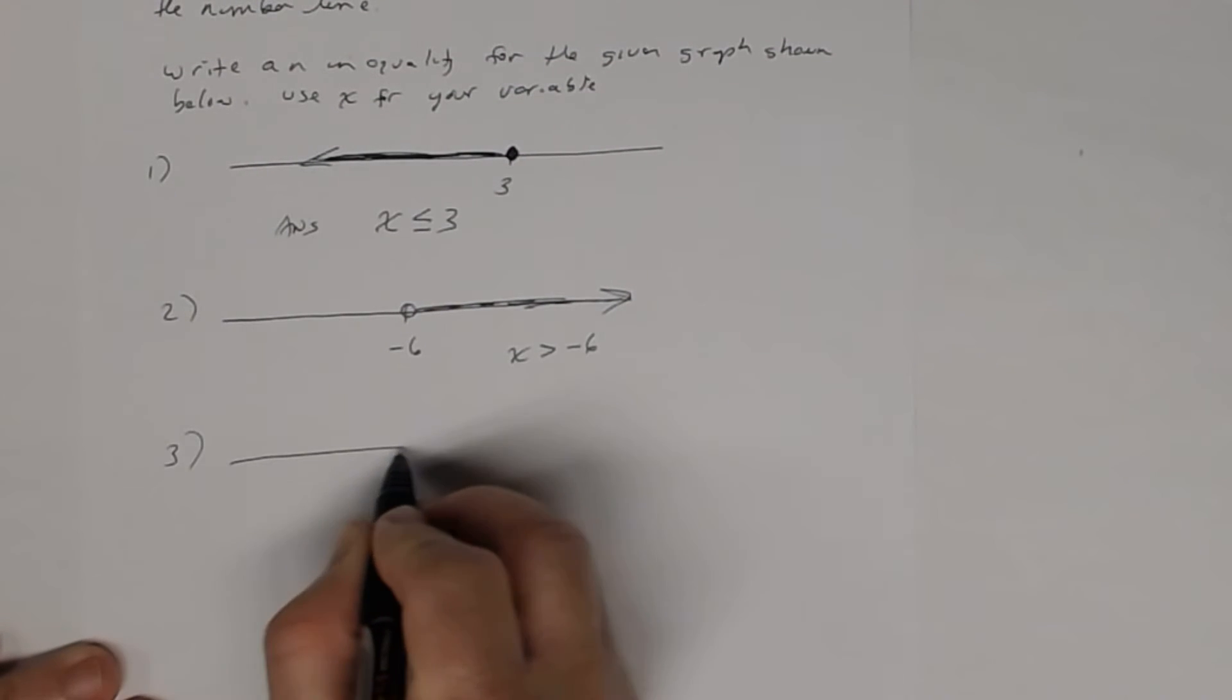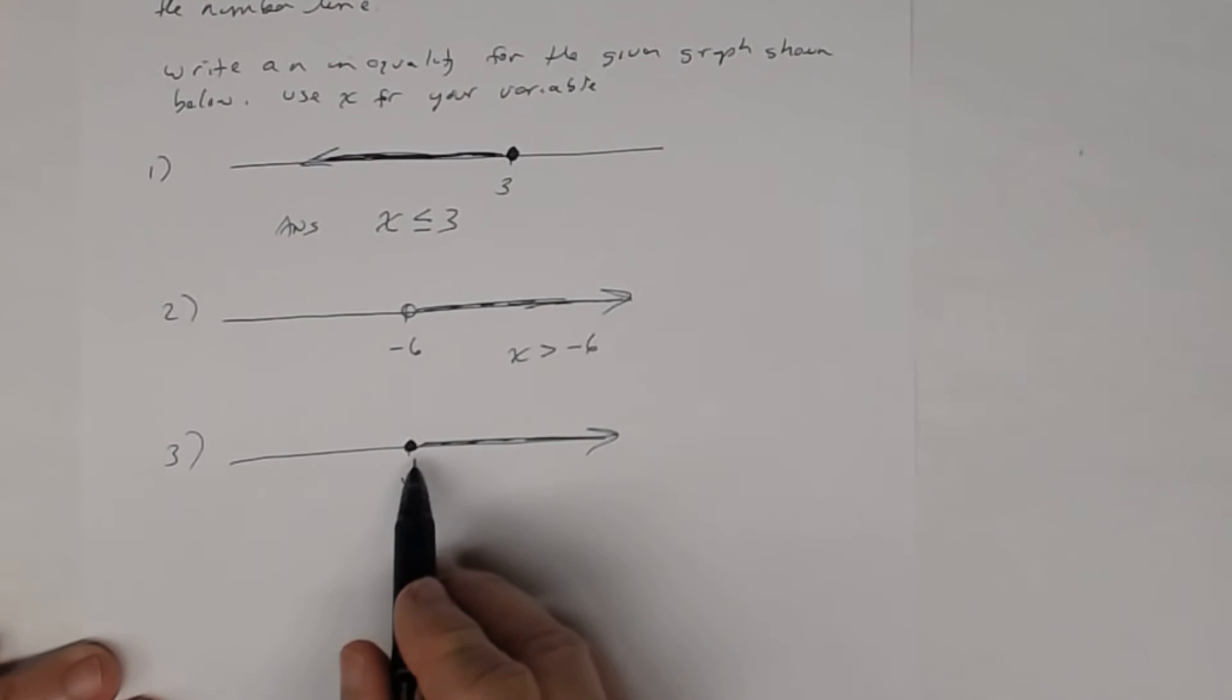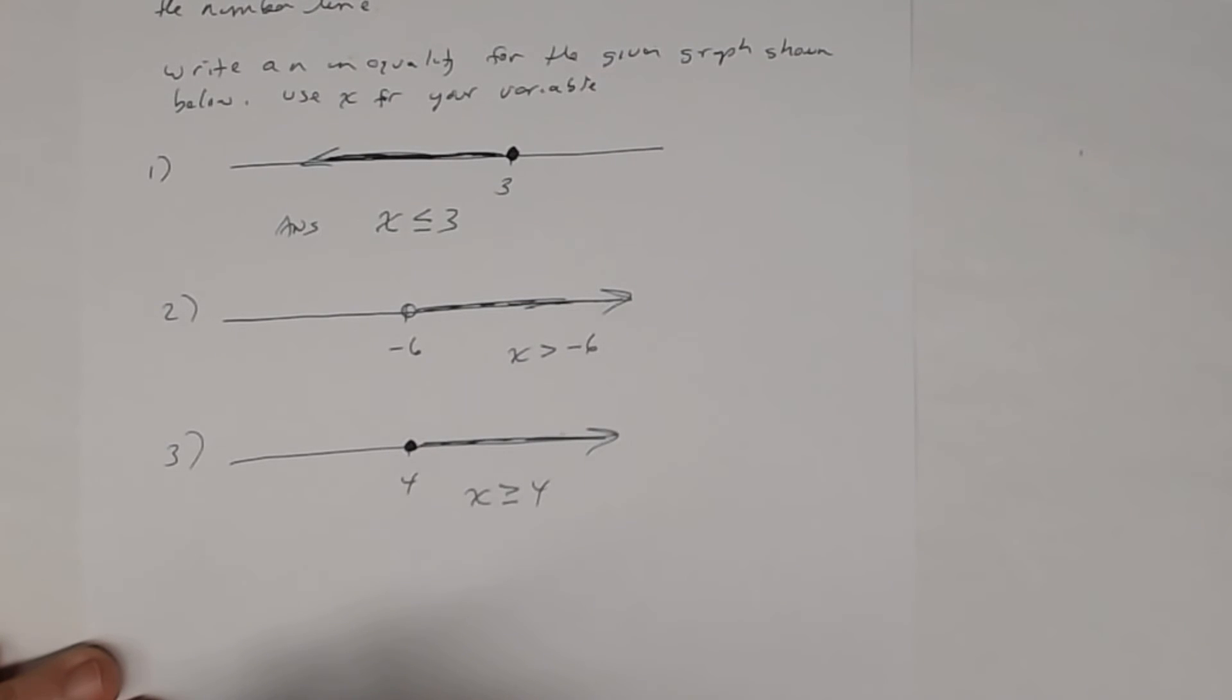Let's look at number 3. Suppose you had 4 with a closed circle going this way. Remember, closed circle means that number is included. It is a solution. So in terms of an inequality, that shaded graph means x is greater than or equal to 4. Any real number greater than or equal to 4 is a solution.